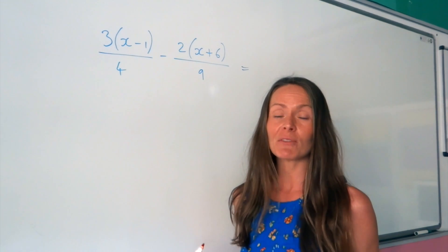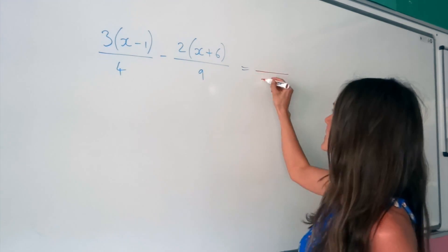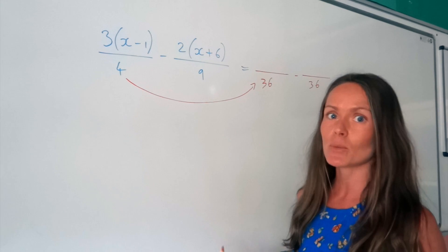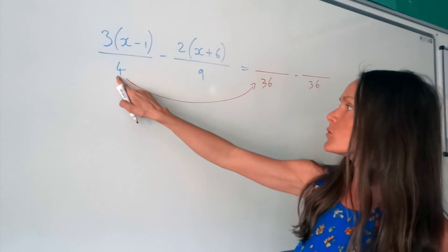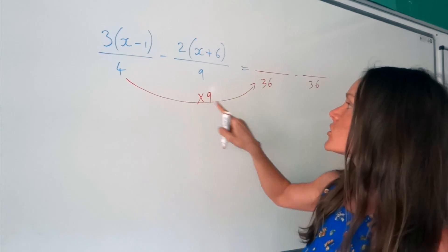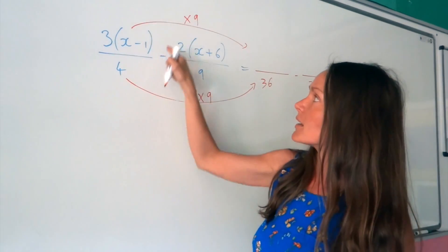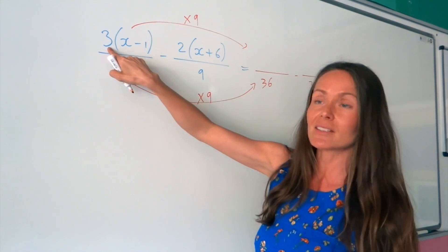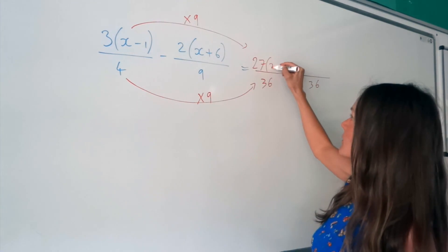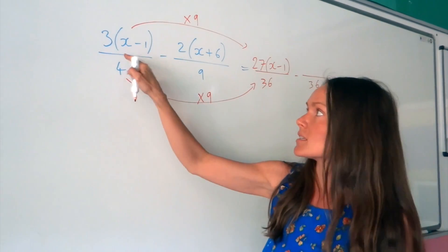Just like before, I need to start by finding the common denominator for these two fractions. So the smallest number that both 4 and 9 fit into is 36. I've found my common denominator. But remember, we need to change the numerators as well to find the equivalent fractions. To change 4 to 36, I have to multiply that number by 9, so I do the same with the numerator — I multiply this numerator by 9. When I multiply by 9, I only need to multiply this number here by 9. So 3 times 9 is 27, and this bracket I can just leave there for the moment.